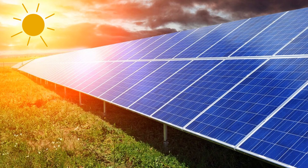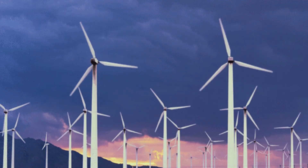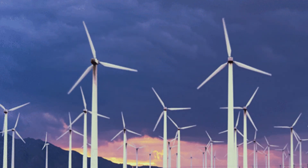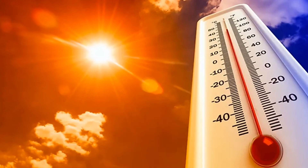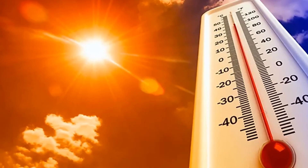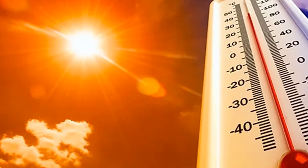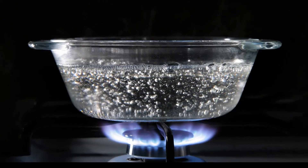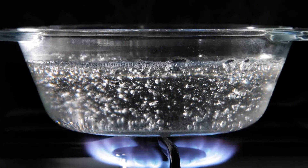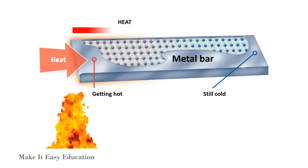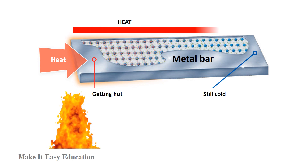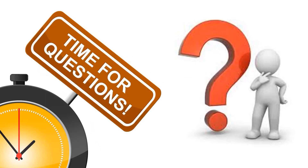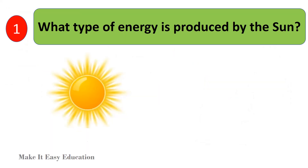The sun and wind can also be used to generate electricity. Heat energy. Heat is the energy that moves between objects of different temperatures. The difference in temperature makes the energy move. Heat moves naturally from an object with a high temperature to one with a lower temperature.